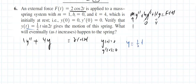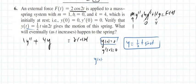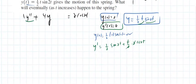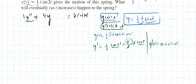Verify that y equals one-half t·sin(2t) gives the motion of the spring. First, y(0) is one-half times 0 times sine of 0, which is 0 — that checks. Taking the derivative using the product rule: y-prime equals one-half times sine of 2t plus t times cosine of 2t times 2. Plugging in t=0: sine of 0 is 0 and cosine of 0 times 0 is also 0, so y-prime(0) = 0 — that checks.